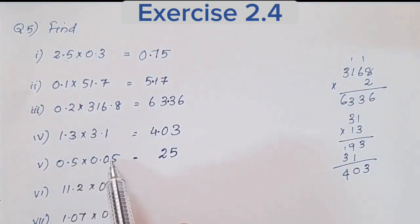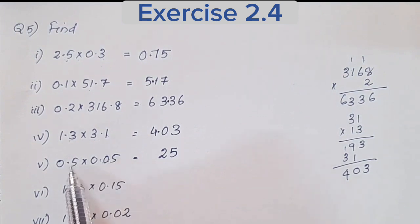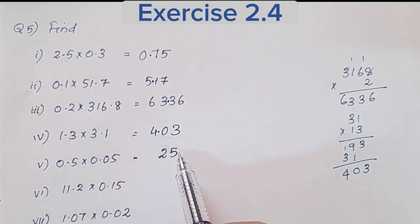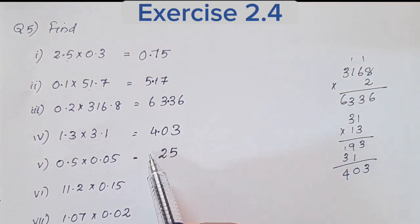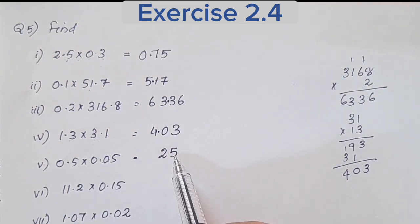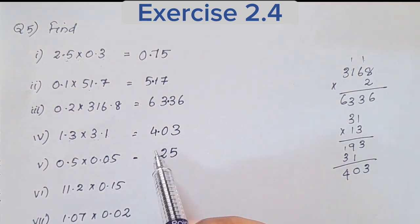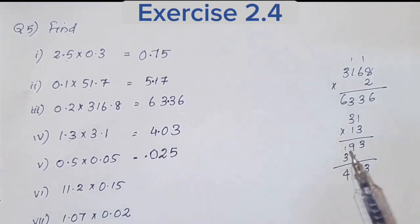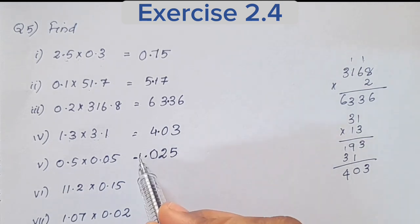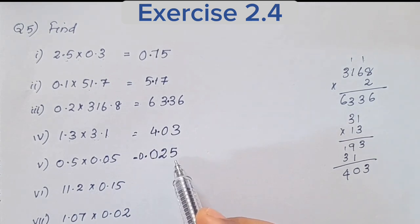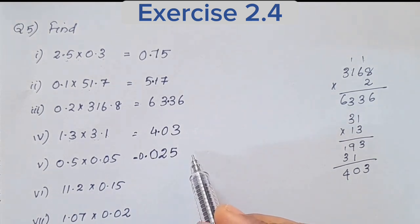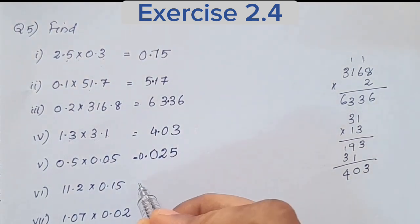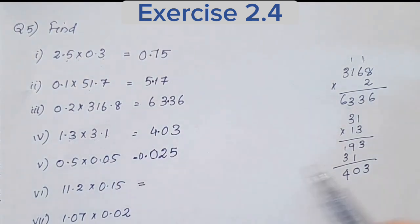We have two digits after the decimal in total, so we place the decimal point two places from the right. We add zeros as needed. Next question.